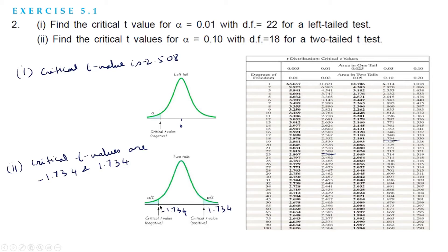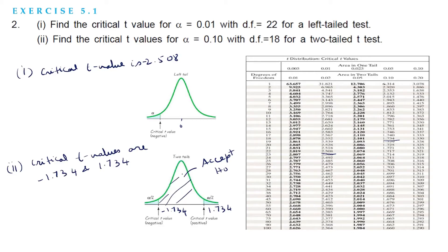If the calculated value falls between the range −1.734 to +1.734, then we will accept H₀. On the other hand, if the calculated value is less than −1.734 or greater than +1.734, then we will reject H₀. The region outside this range is called the region of rejection, and the region between the critical values is called the acceptance region. This covers finding critical t-values for left-tail and two-tail tests.